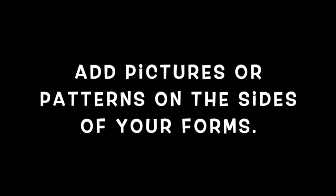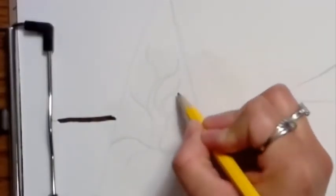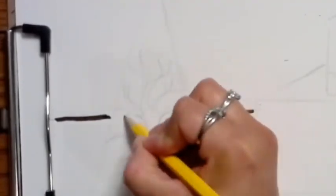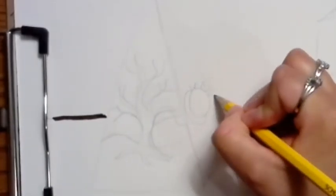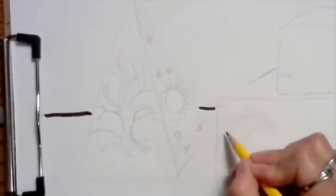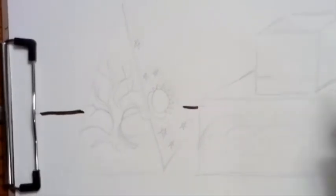So each side of your 3D form drawing will become a different work of art as well. Add pictures or patterns on each side of your forms. You can draw anything you want. Just make sure the entire side is complete with color.